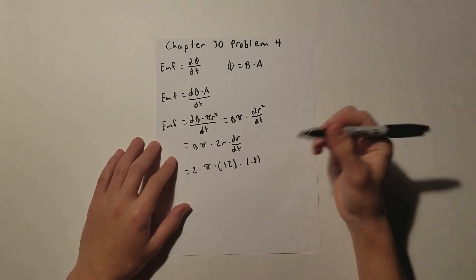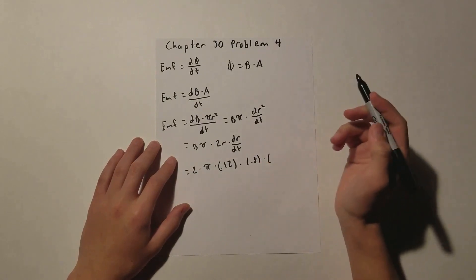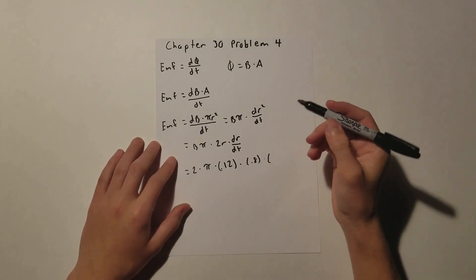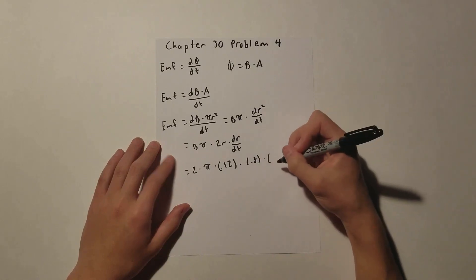And lastly, we are given the change in radius with respect to time as 75 centimeters per second. And we also have to convert that to meters per second, so that's going to be 0.75.